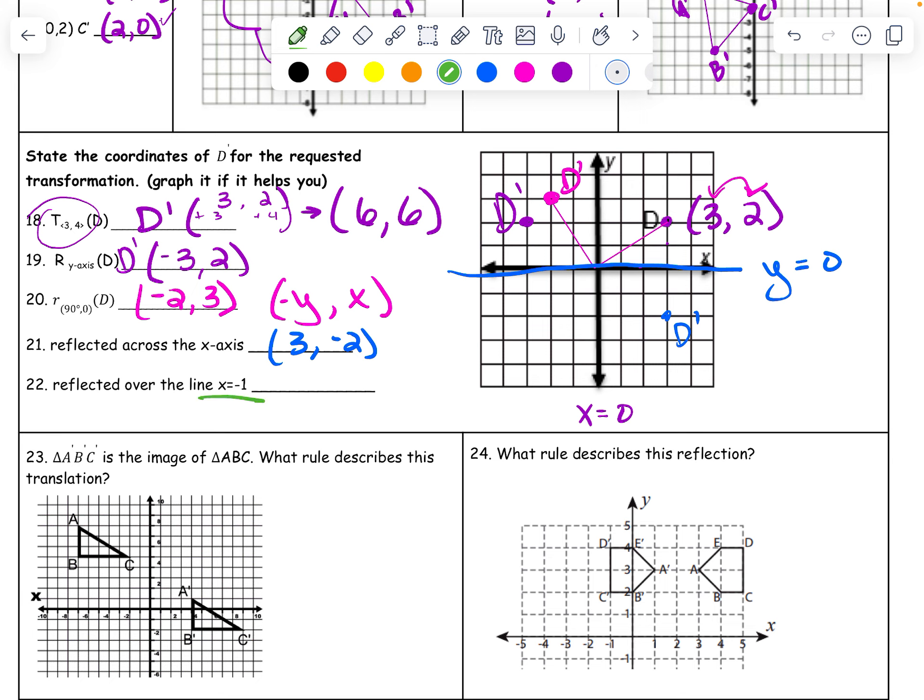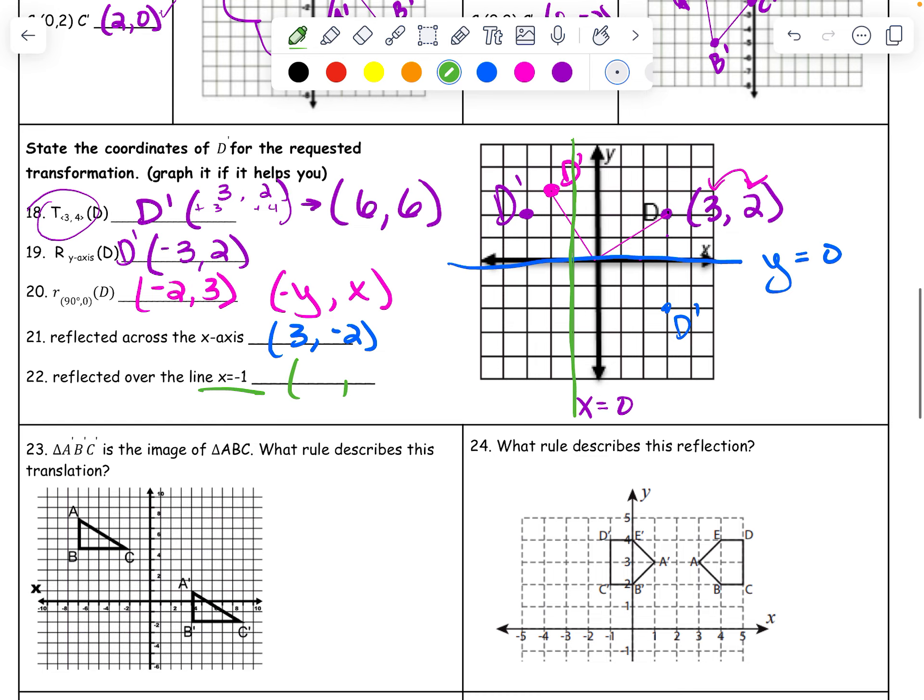And then this last one I'm going to do in green. x equals negative 1. x equals negative 1 right here. Make that just a little thicker. So all I'm changing is the y. So my x is going to. No. All I'm changing is my x because it's x equals negative 1. So my y is going to stay at 2.